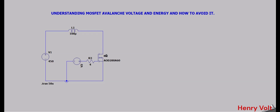During turn-off, the inductor cannot hold the energy, so it has to discharge. What happens is the inductor discharges its whole energy into the MOSFET. But the MOSFET is turned off, so this energy cannot flow further — it is converted into voltage, which is called inductive voltage. If this inductive voltage across drain-to-source is more than the breakdown voltage, the MOSFET has gone into avalanche.